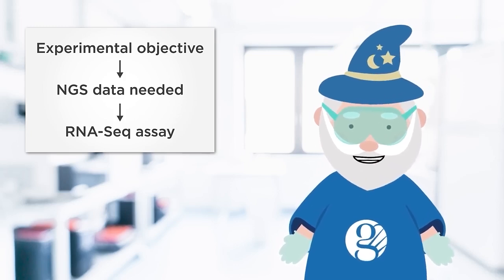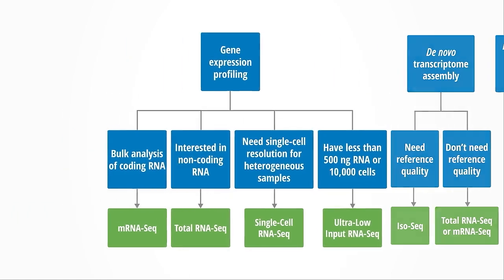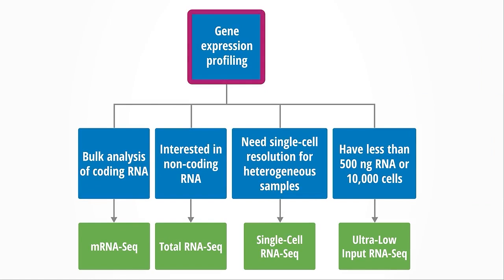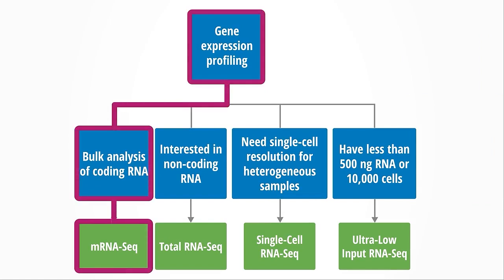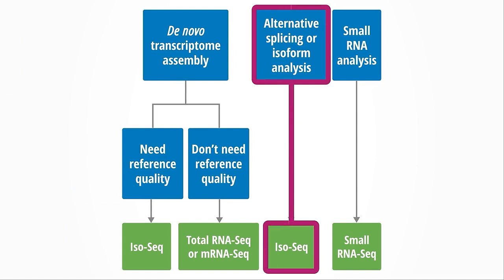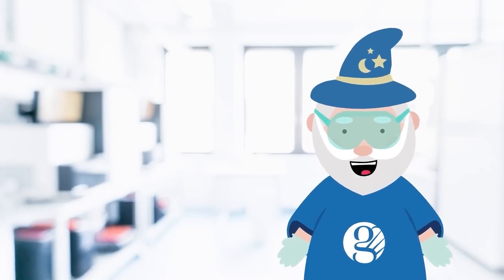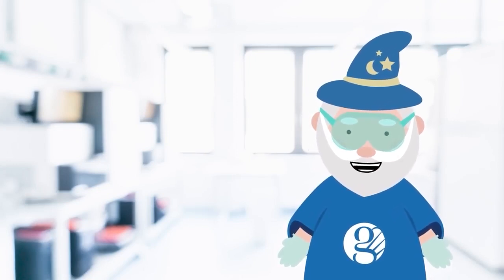To help you navigate this selection process, we've created this decision tree. The blue boxes represent objectives or requirements of your experiment, and the green ones at the bottom are RNA-seq assays. For example, if you're looking to quantify gene expression and you're only interested in coding sequences, then mRNA-seq would be the most appropriate and cost-effective approach. If you're interested in alternative splicing, then IsoSeq, or isoform sequencing, would be the way to go, since long-read technology captures the full-length sequence of mRNA with high certainty. Please keep in mind that these guidelines are by no means exhaustive, but they should provide a good starting point when designing your NGS project.